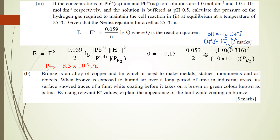Bronze is made of copper and tin. The standard electrode potential of copper is +0.34 V, and tin is approximately −0.14 V. The key context here is exposure to air over a long period in an industrial area, meaning the air is acidic. The suitable half equation for acidic air (reduction) is: 4H⁺ + O₂ + 4e⁻ → 2H₂O.